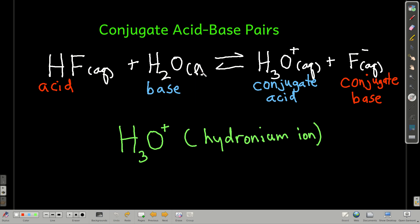Next, conjugate acid-base pairs. So there's a lot of equilibria that occur with acids and bases. For example, if you were to put hydrofluoric acid in water, an equilibrium occurs. And what happens is the hydrofluoric acid molecule donates a proton to the water molecule. When it does, it produces something called the hydronium ion, H3O+, and leaving behind the fluoride ion.